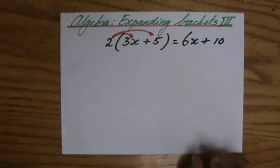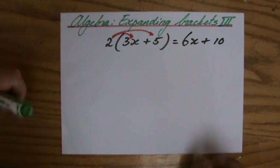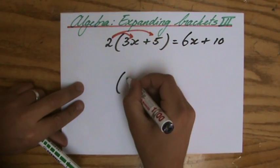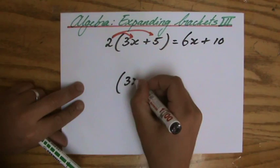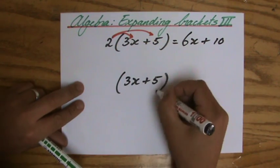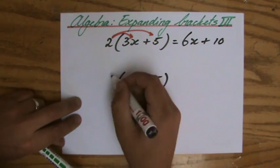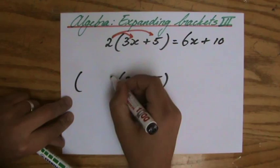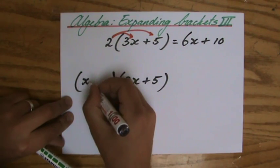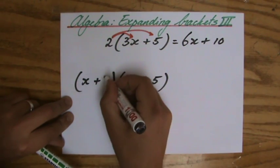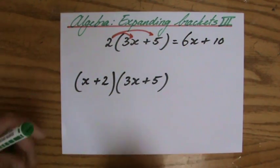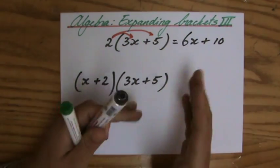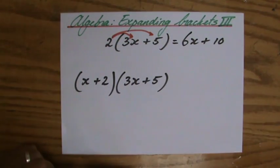Now I'm going to add something new. Let's still have the 3x plus 5, but now I'm not going to multiply just by 2 — I'm going to multiply by x plus 2, for instance. So I have two sets of brackets.